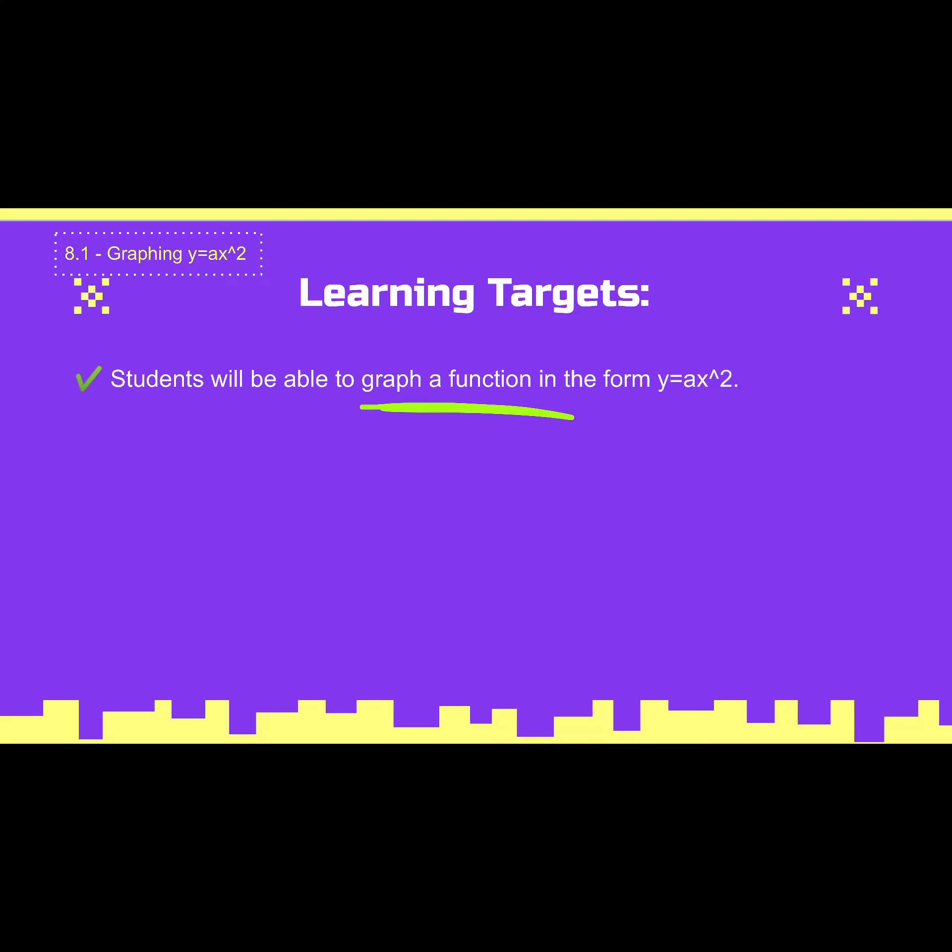Now in the past, have you guys seen people use this for an exponent? It's not good or bad if you have or haven't, because when you go on Canvas and look at our modules or even some things in tests or quizzes, you might see that little arrow, and that just means that we have something to a power.